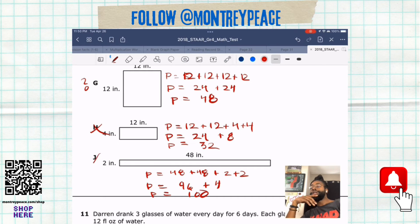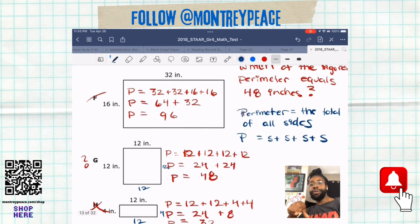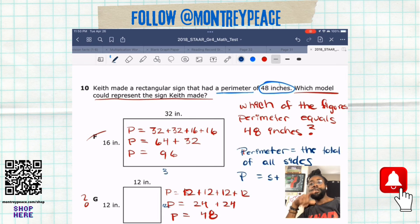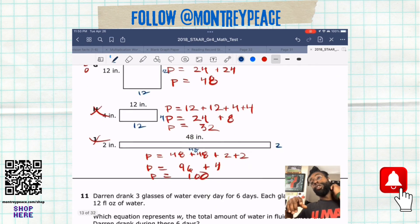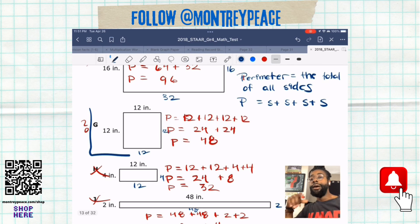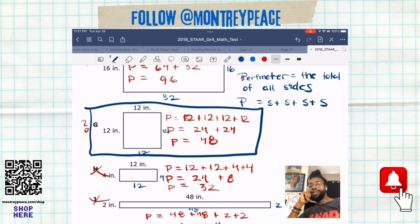So we know G is our answer. I'm going to go back and put these numbers in for you: 48 on the bottom, 2 on the side, 12 on the bottom, 4 on the side, 12, 12, and then 32 and 16. That's how you know where I got those numbers from. G is our correct answer, guys. Just make sure you follow your steps, follow your formulas, and you guys are going to be fine.